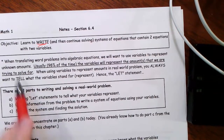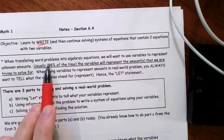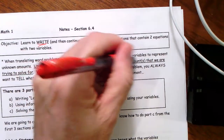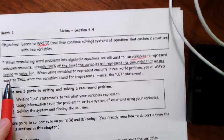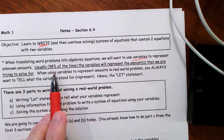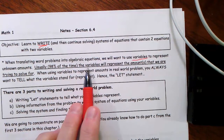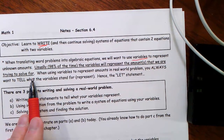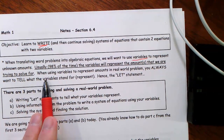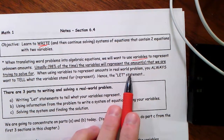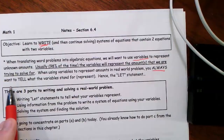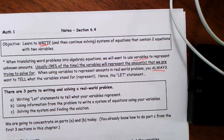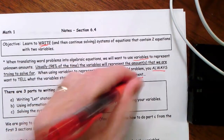So here's the deal. When translating word problems into algebraic equations, you're going to want to use variables to represent unknown amounts. And I have this thing I call the 98% rule, which is usually 98% of the time, the variables will represent the amounts that we are trying to solve for. When using variables to represent amounts in a real-world problem, you always want to tell what the variable stands for or represents. Hence, we have this thing called the let statement.